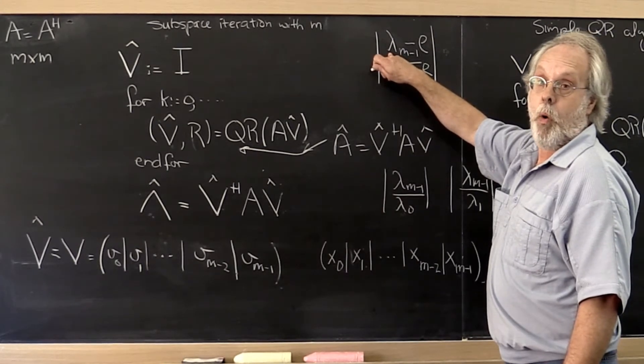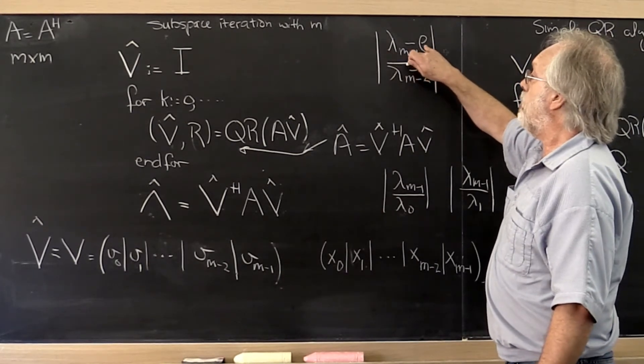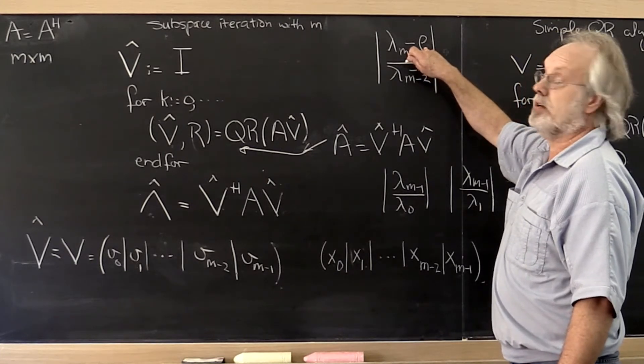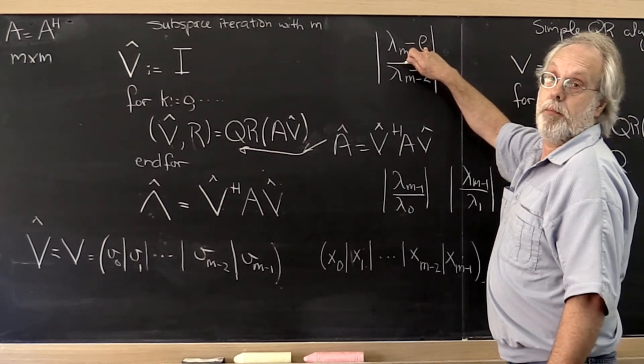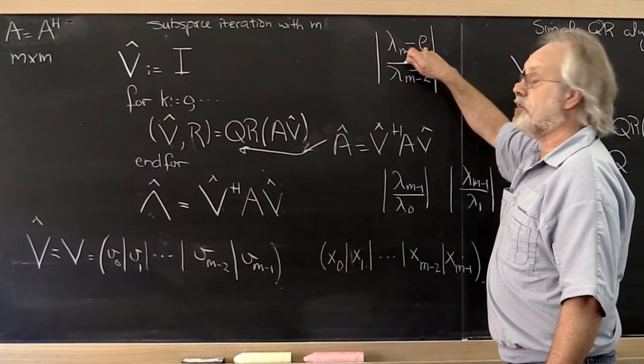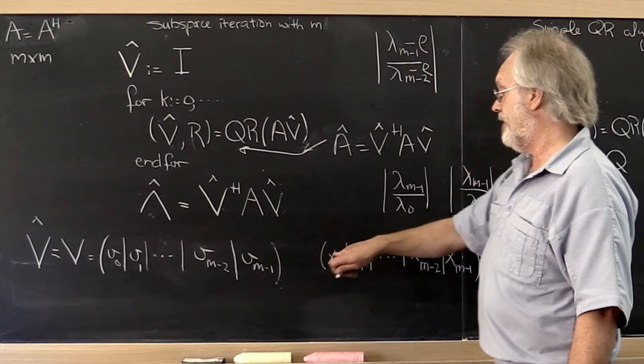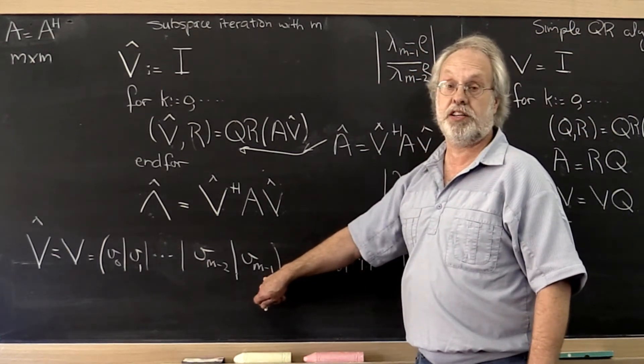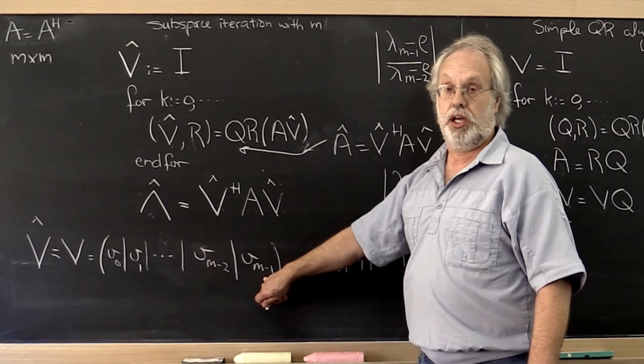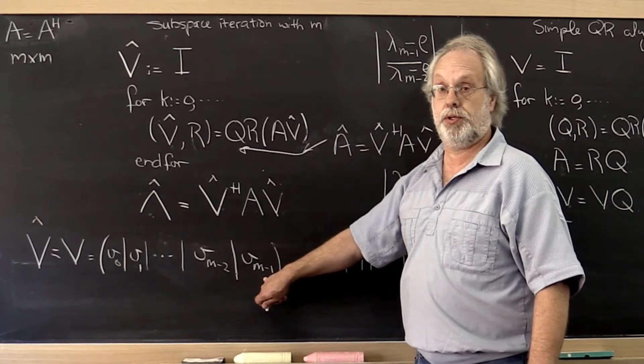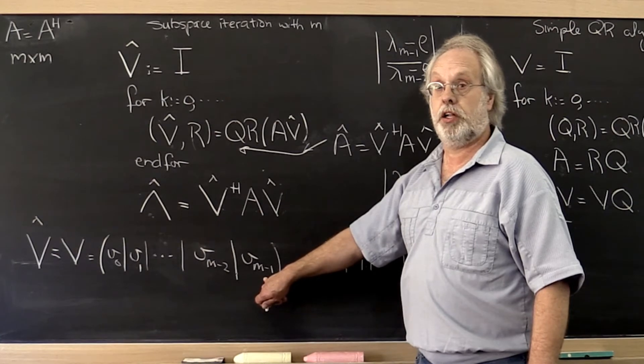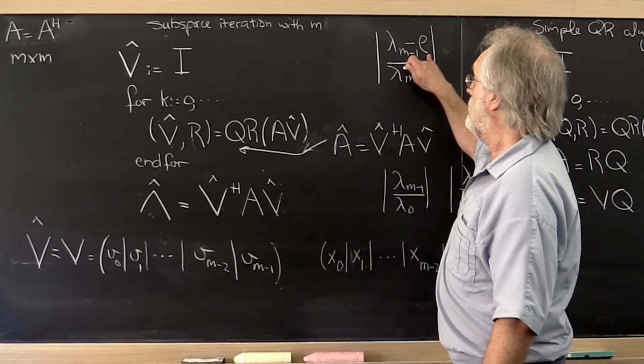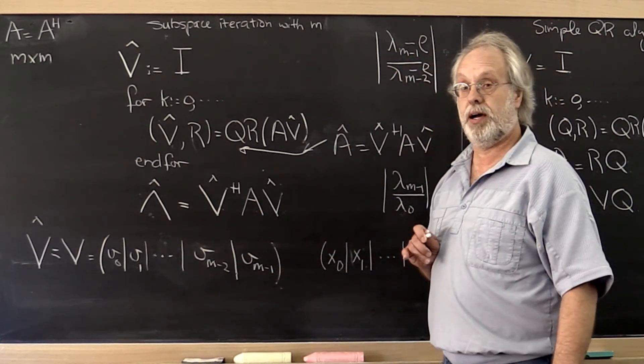And then we said, we can come up with what that shift is by saying we have an approximation for the eigenvector associated with the smallest eigenvalue. And we can then use the Rayleigh quotient to actually compute that shift, an approximation for lambda m-1.